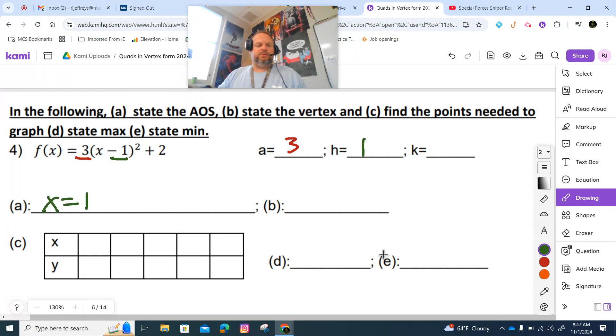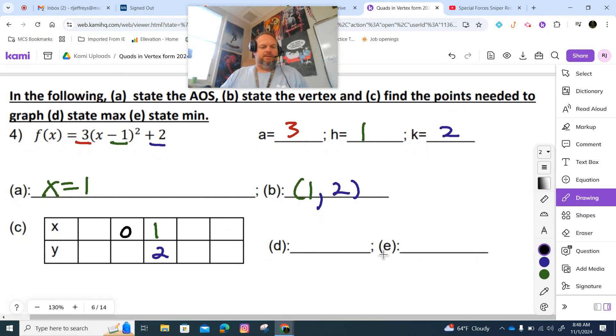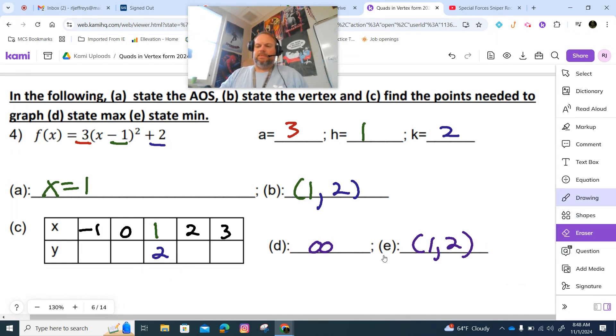I think in the past this is how it has been - the AOS, the vertex, stuff like that used to have something else but I took that off. That's why we're actually having to record today. This is a positive one. This is x equals 1. Our A is positive so our max is infinity, our min is one, two.